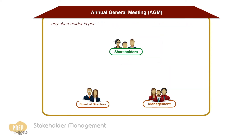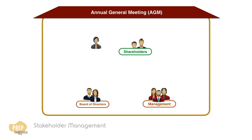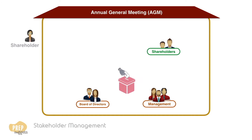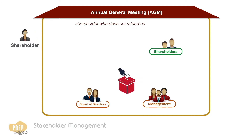Typically, anyone who owns the company's shares is permitted to attend, to speak, or to ask questions and to vote. A shareholder can miss the meeting and still vote by proxy, meaning that she assigns her right to vote to another who will attend the meeting.